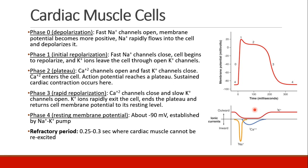Now let's talk about cardiac muscle cells. This is a continuation of what we were discussing in the introduction. We've learned about action potentials and resting membrane potentials. When we look at a cardiac muscle cell, it has a resting membrane potential close to negative 90 millivolts.